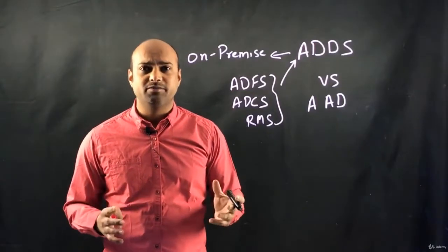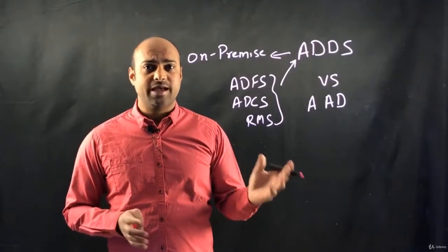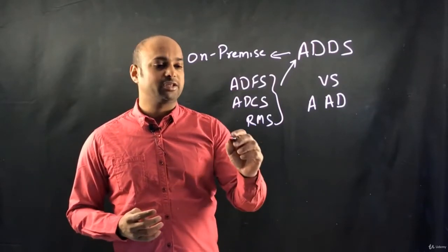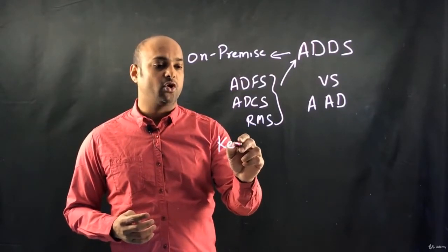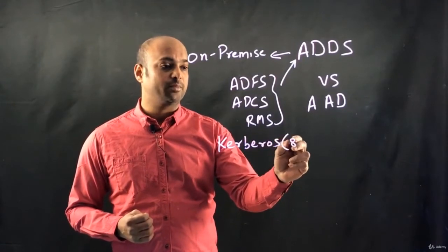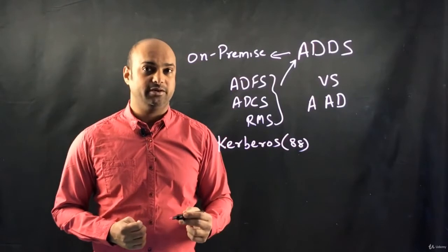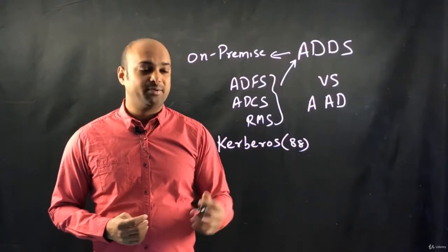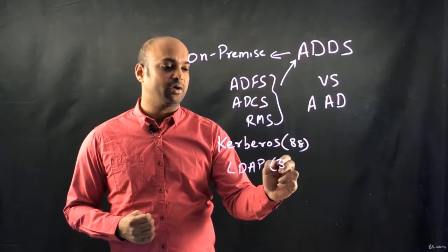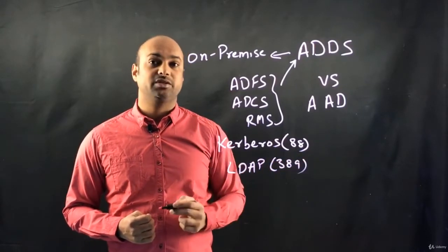All your client machines, like Windows 7 or Windows 10, and older clients like Windows XP as well, used to get authenticated with the help of a protocol called Kerberos, which is running on port number 88 UDP. How about LDAP connections? All the LDAP connections and connectivities used to happen on port number 389.